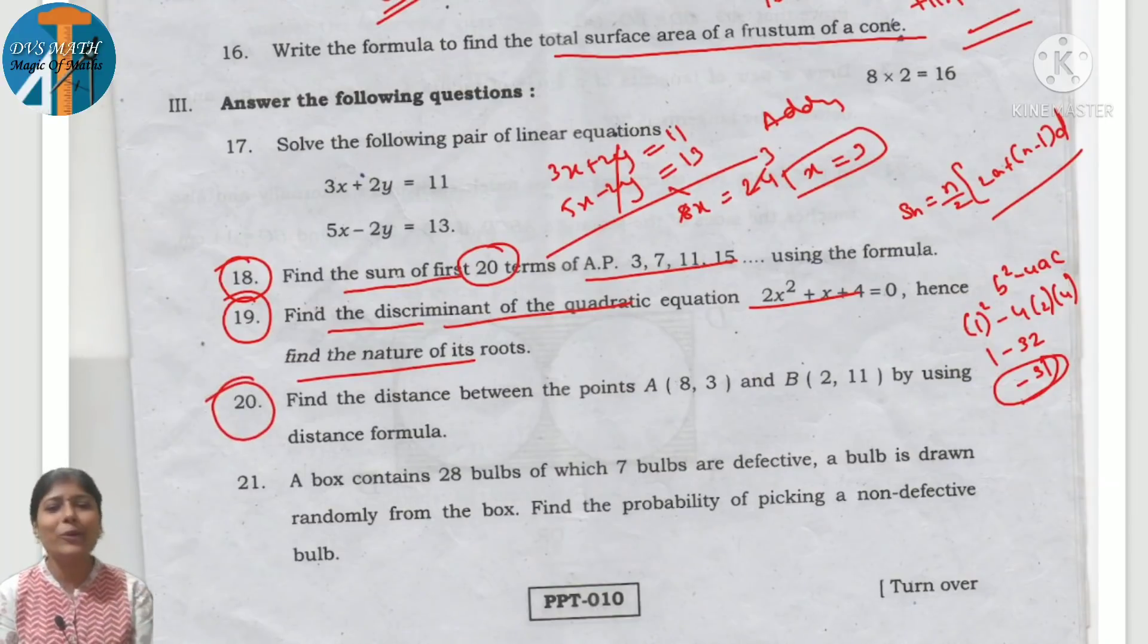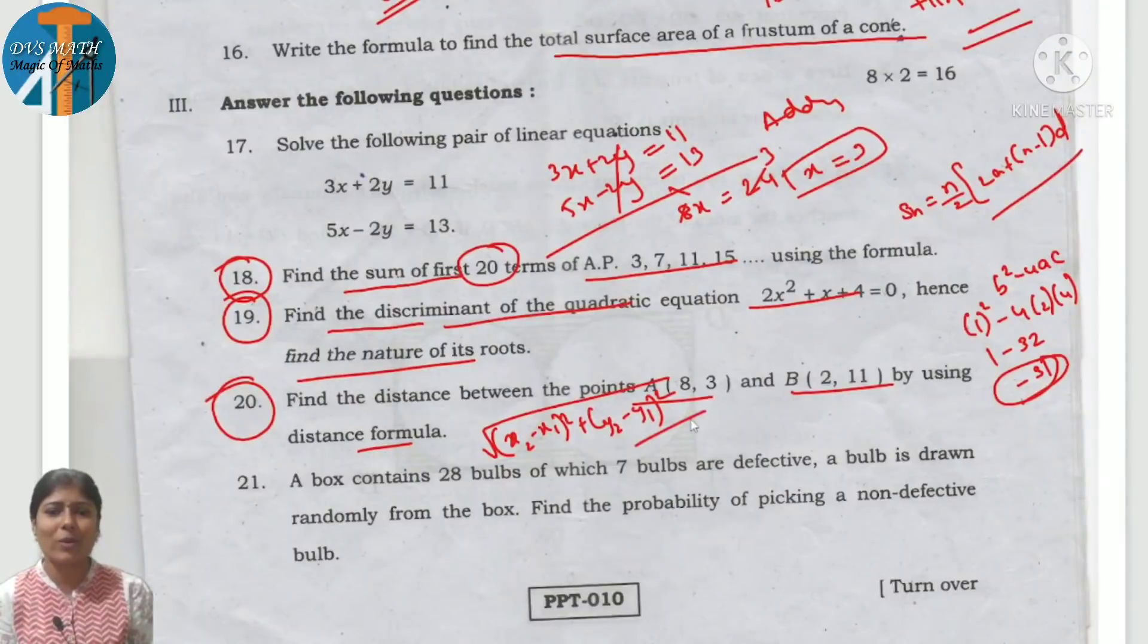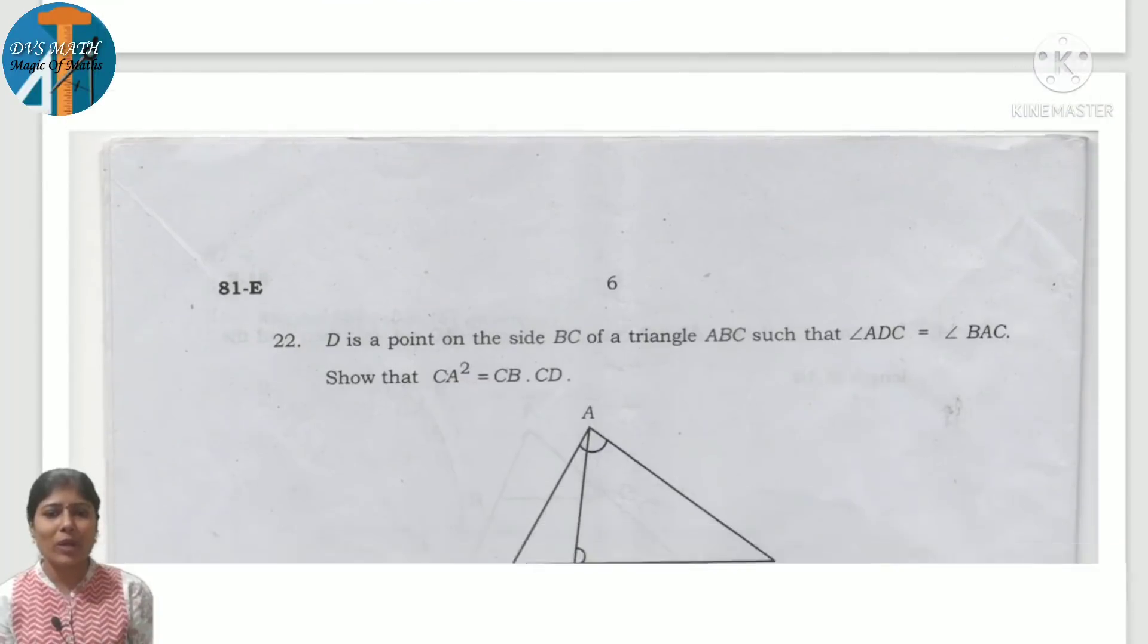Question number 20: the distance between the points A and B using distance formula. Distance formula: square root of (x2 minus x1) whole square plus (y2 minus y1) whole square. Simplify it.